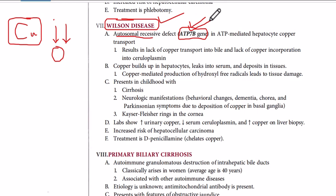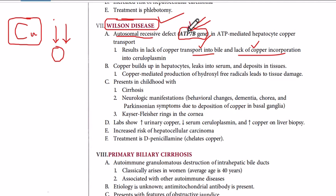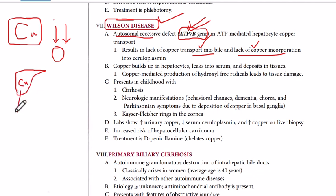If you have a defect in the ATP7B gene, you will not be able to transport copper into the bile — you will not be able to excrete copper. Copper is transported by ceruloplasmin, and incorporation into ceruloplasmin does not happen because of the defective mutation of the ATP7B gene. So copper cannot be excreted into the bile and cannot be properly transported, and it accumulates in the liver.